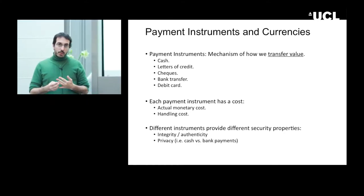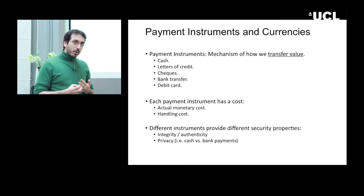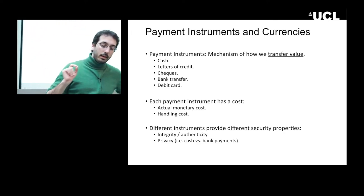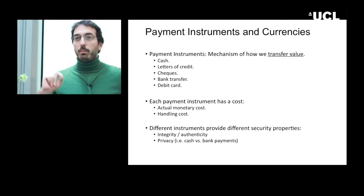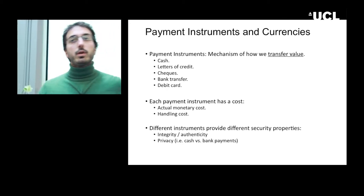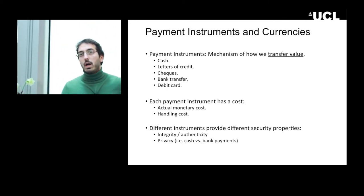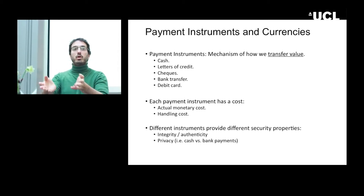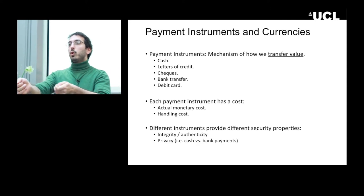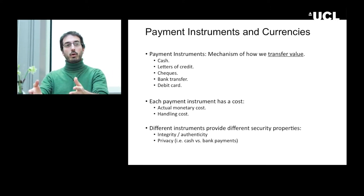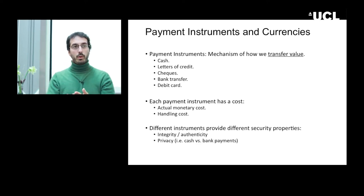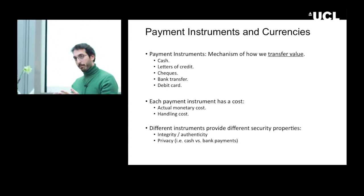Different instruments also provide very different properties when it comes to security and privacy. The key distinction between all the electronic payment systems and old-style cash is anonymity. With cash you can go to a shop, give some tokens, get the goods, and no one asks your name. Whereas if you use the banking system, your name is always associated with the transactions.